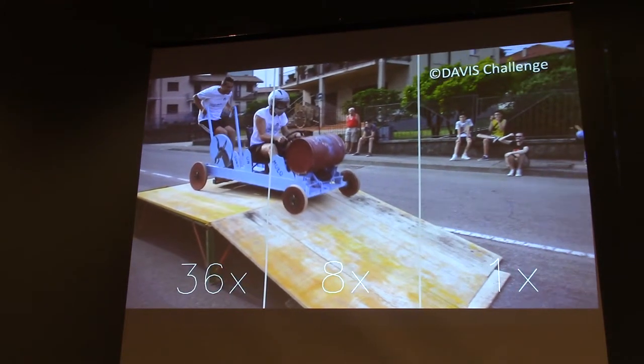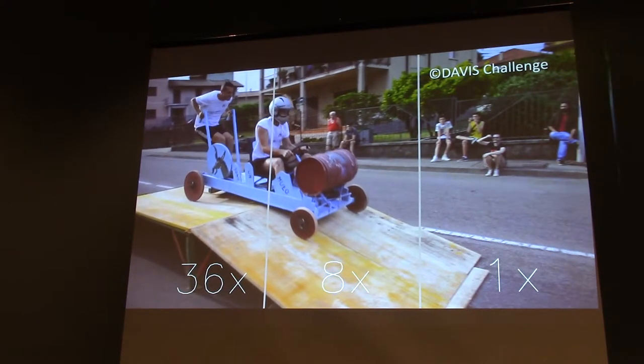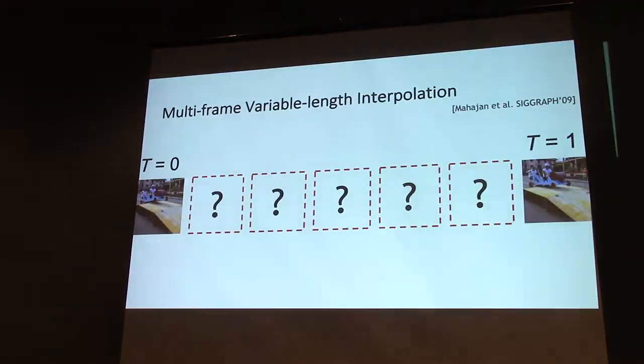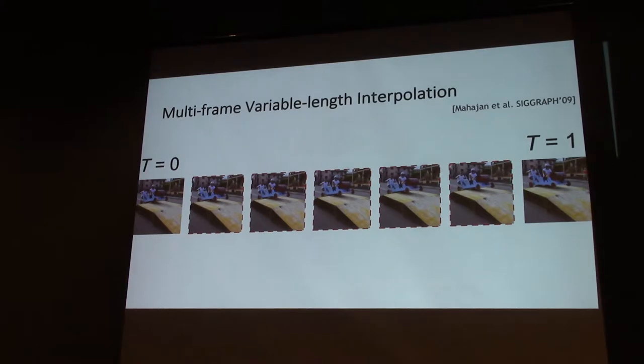So how can we generate super slow motion videos? Well, given two input frames, we need to generate a set of intermediate frames to form a coherent video.